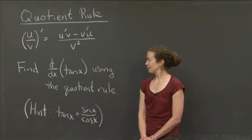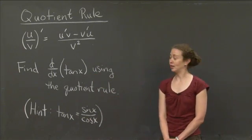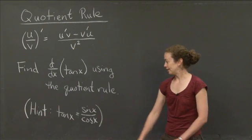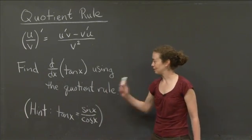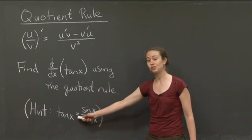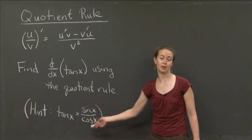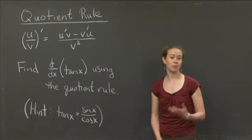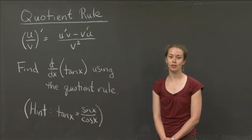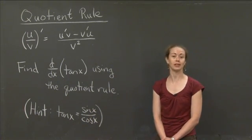I'm asking you to take d/dx of tangent x using the quotient rule. The hint I will give you is that we can use the quotient rule because tangent x is a quotient of two functions of x. It's sine x divided by cosine x. I'm going to give you a minute to work this out for yourself, and then when we come back, I will do it for you.